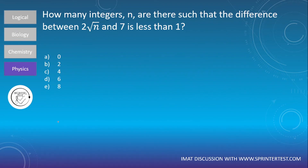Let's move to the last question of the day: how many integers n are there such that the difference between 2√n and 7 is less than 1? The answer options are 0, 2, 4, 6, and 8.